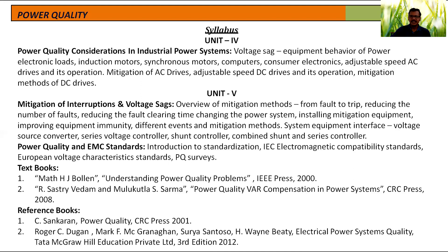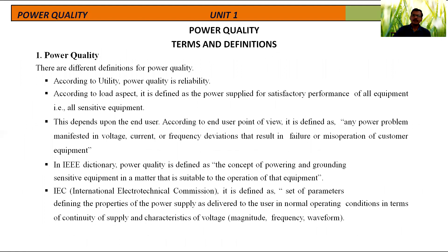Coming to the first unit introduction — what is the definition of power quality. Power quality has so many definitions from different aspects. The first definition is according to utility: power quality is simply called reliability. From the utility point of view, the power supply should not deviate — it should not be disturbed. Reliability means whatever may be the problems, we should get continuity of supply. That is power quality. If power quality is less, automatically we cannot get continuity of supply, and reliable power is not available. Therefore, from the utility point of view, power quality is simply called reliability.